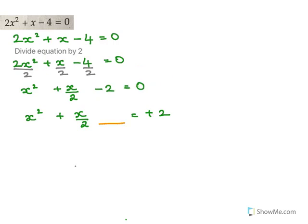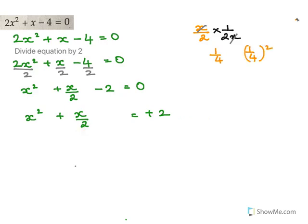Now it's time to complete the square — we need to fill in a number on both sides. We take the middle term x/2 and multiply it by 1/(2x), dividing by 2x and cancelling. We get 1/4, so we add (1/4)² to either side.